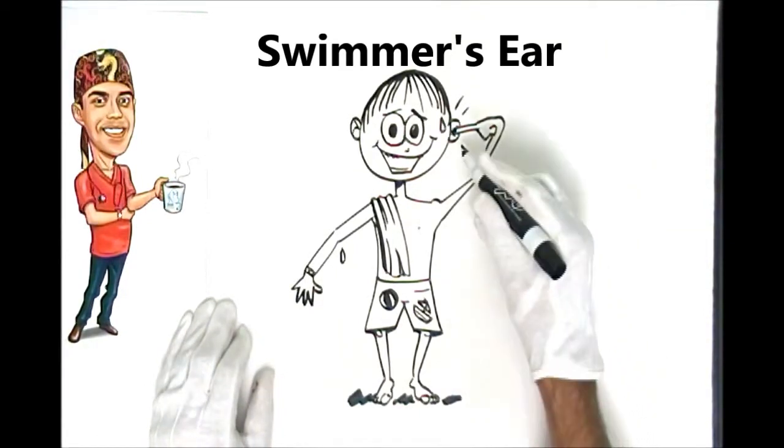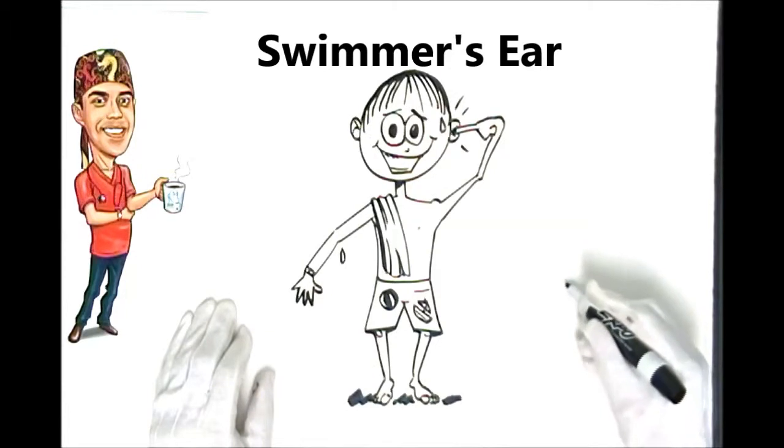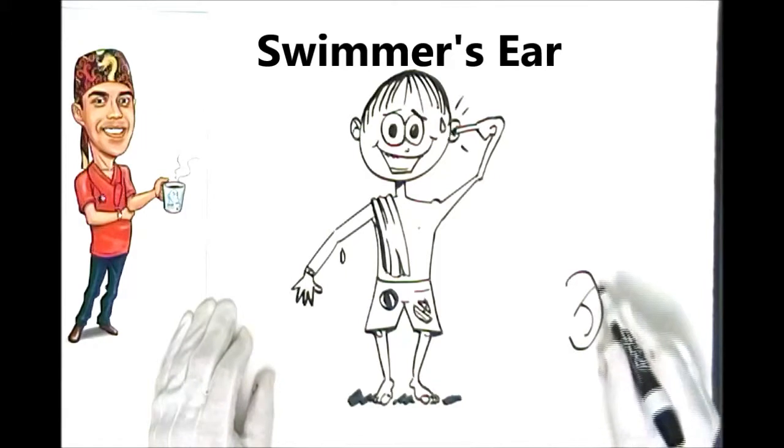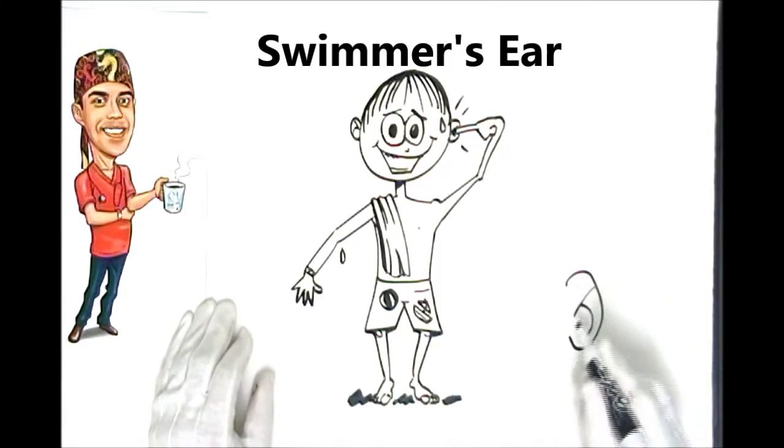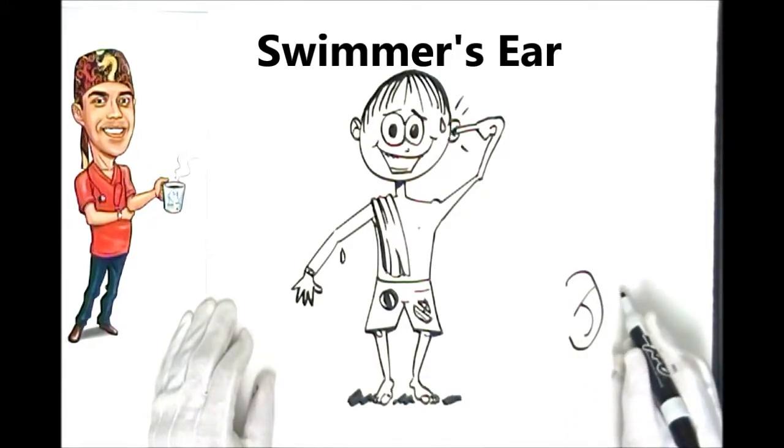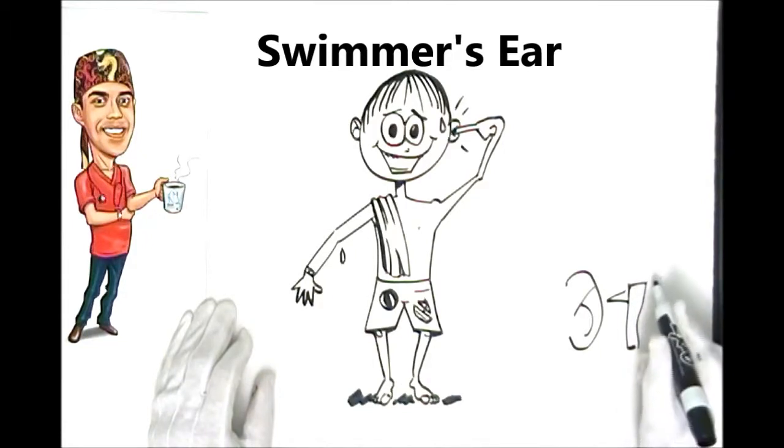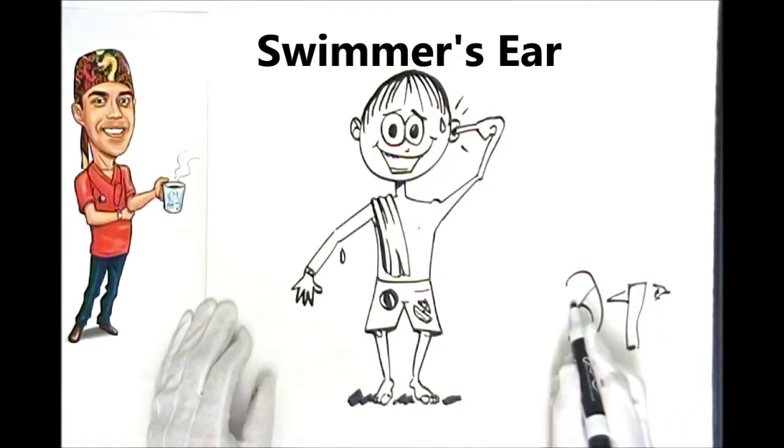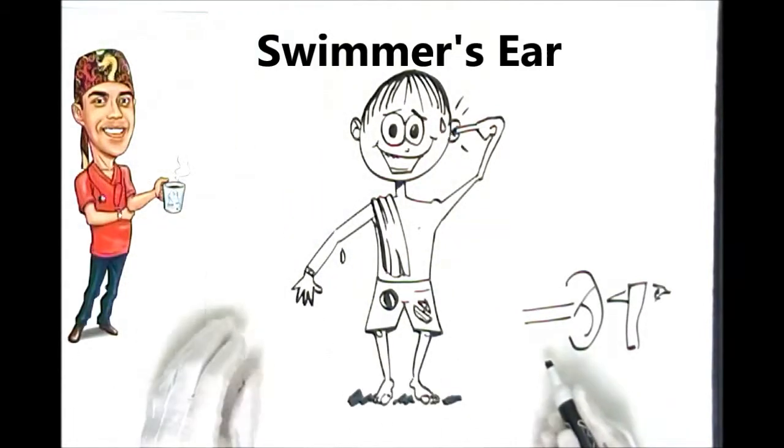And what's really occurring is that if we use this same ear here as an example, what you have is the external part of the ear called the Pinna. That's not really involved, but if you could look inside, we usually use something called an Otoscope to look inside. So this is me looking in here. So you put the tip of the Otoscope through into the Pinna and inside, you'll find that there's a canal, almost like a cylinder, like a Pringles can.